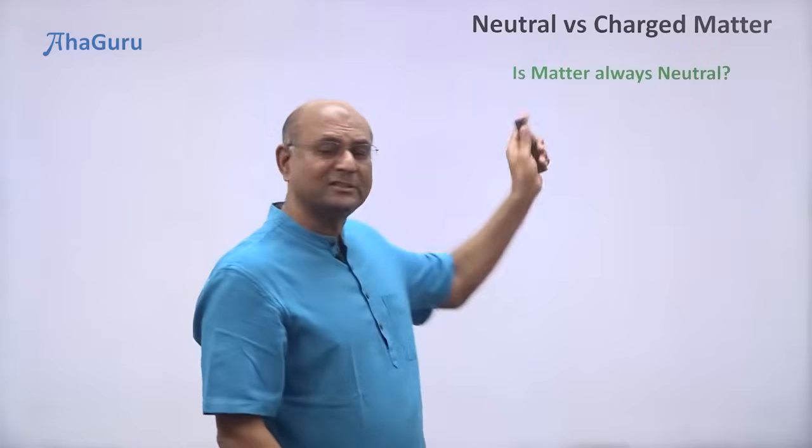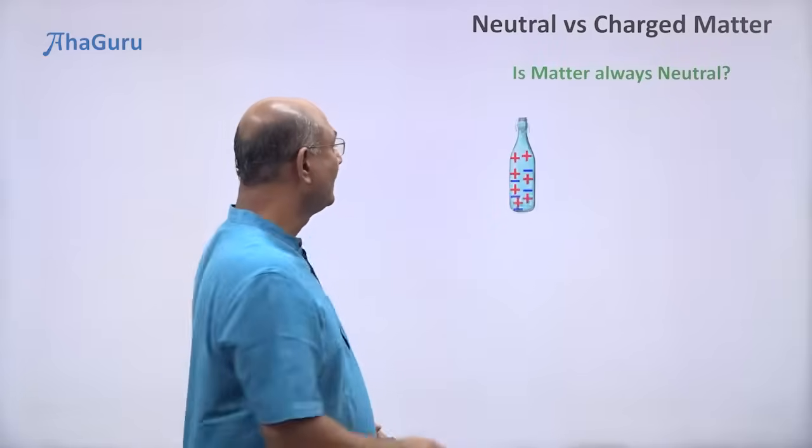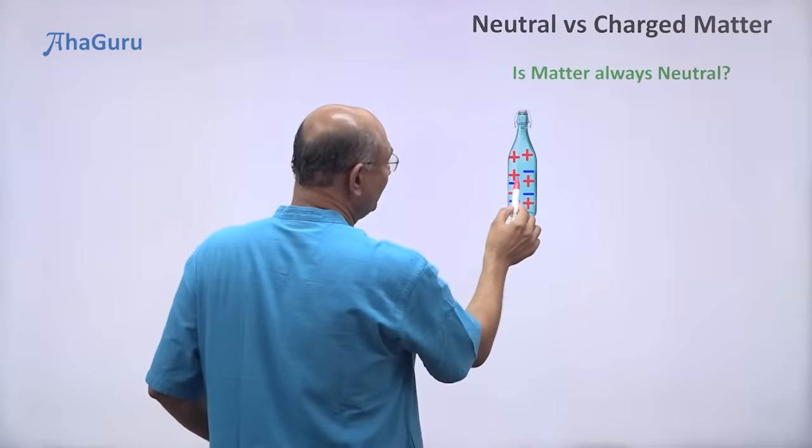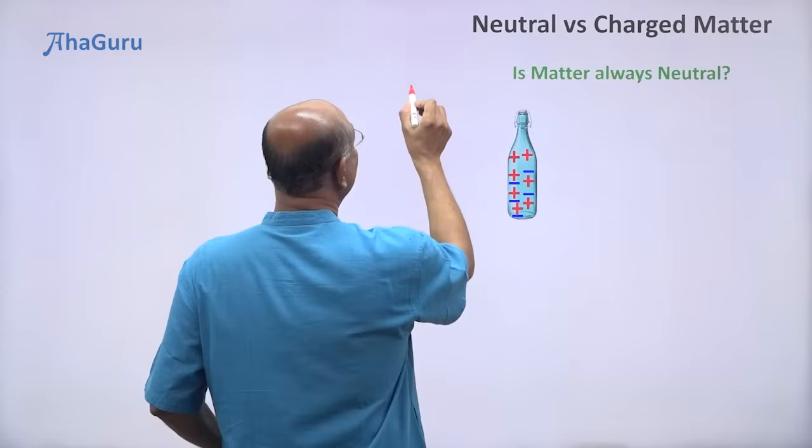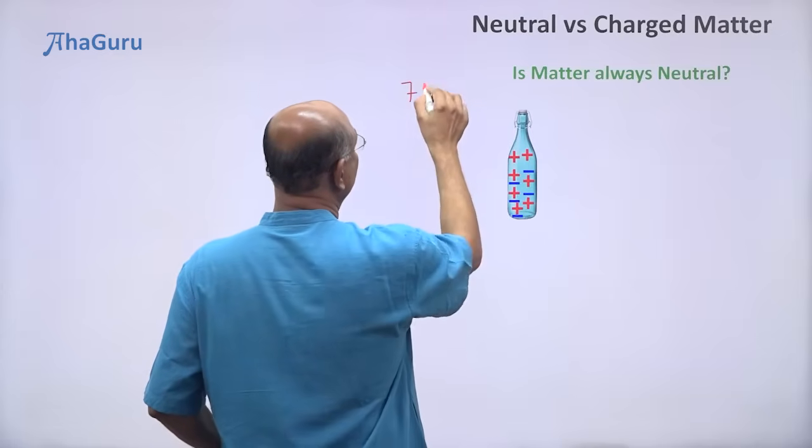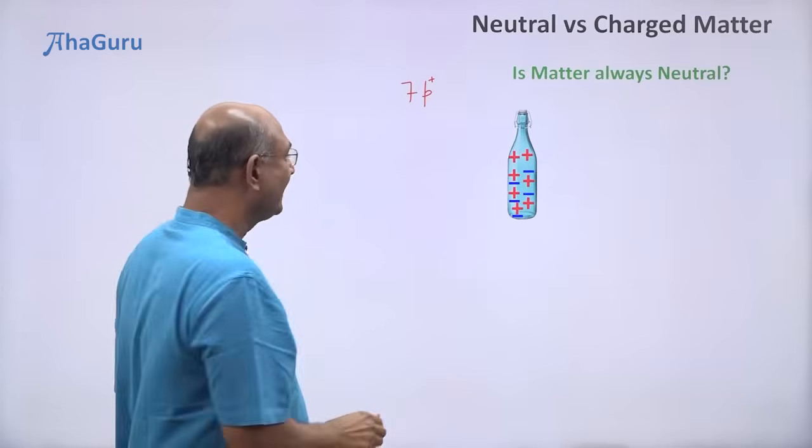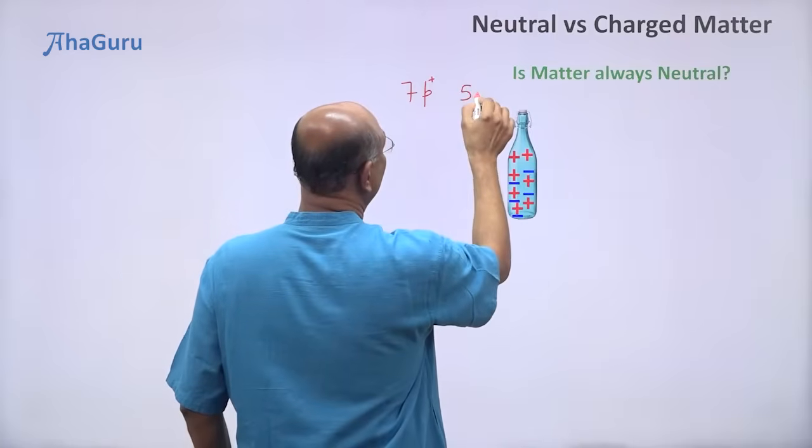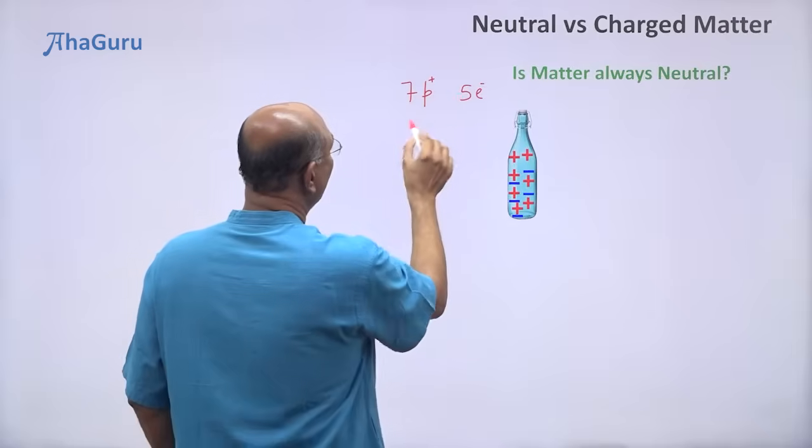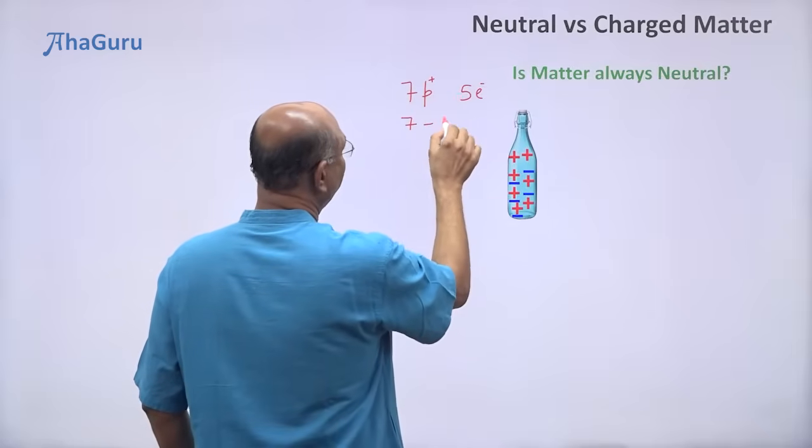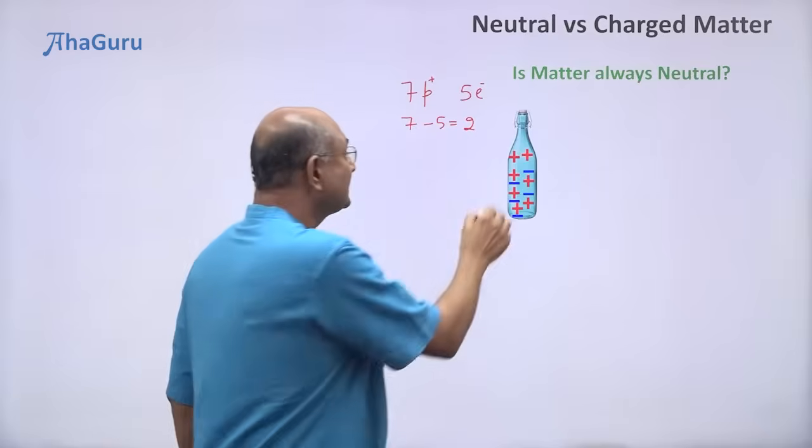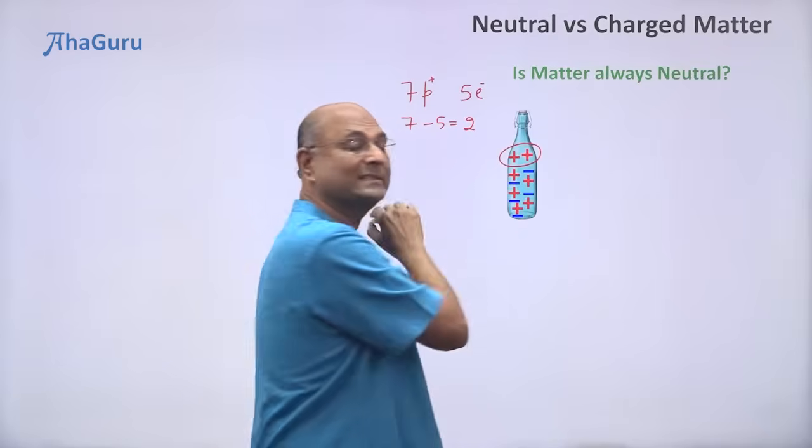Is matter always neutral? Not really. Look at this bottle. So if you look at this bottle, it has one, two, three, four, five, six, seven. It has seven positive charges, seven protons. And it has one, two, three, four, five, five electrons. So seven plus and five minus. So totally two plus. So it has two excess protons.